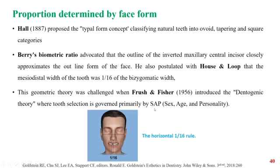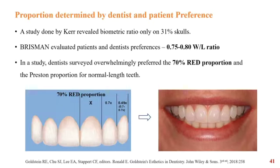Regarding sex: in females, the incisal edges are kept more rounded and inclination is comparatively less, whereas in males the incisal edges are less rounded. Regarding age: in young teeth, the incisal edges are not worn and the incisal embrasures are well defined; in aged individuals, there is wear of the incisal embrasures and the amount of display is less. Regarding personality: for a person with a vigorous personality, the canine tip can be kept more pointed and sharp; for a person with a soft personality, the canine tip can be kept more rounded and short. Brissman evaluated that patients and dentists mostly preferred a width-to-length ratio of 0.75 to 0.8 and the 70% recurrent aesthetic proportion.